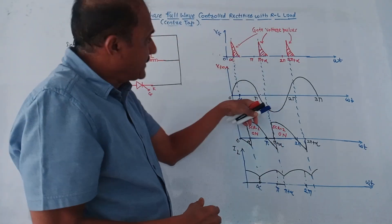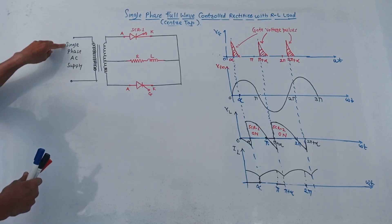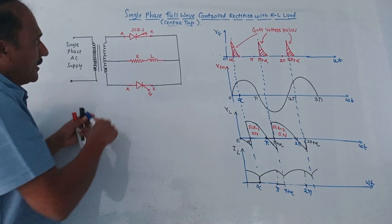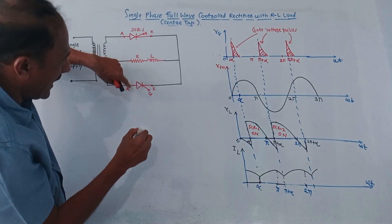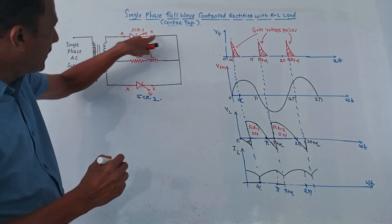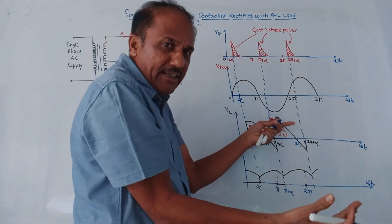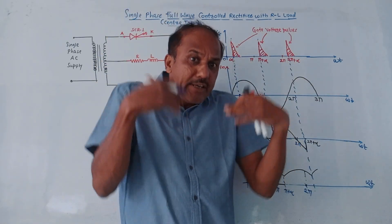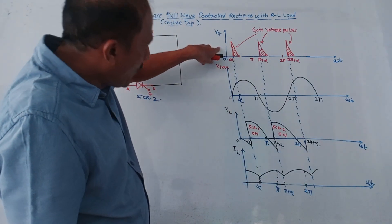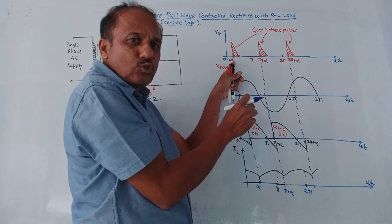As far as the waveforms are concerned, I will explain while discussing the operation in detail. At the input side we are giving single phase AC supply. This is the output side with a center tap. We are using two SCRs: SCR1 and SCR2. We know the regular conventions — anode terminal, cathode terminal, and gate terminal. During the positive half cycle, in order to make the SCR conductive, you need to apply gate pulses to the gate terminal of the SCR at an angle alpha, which is called the firing angle.